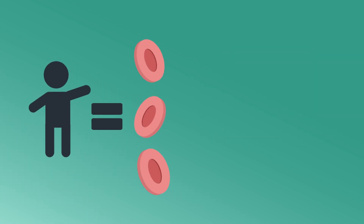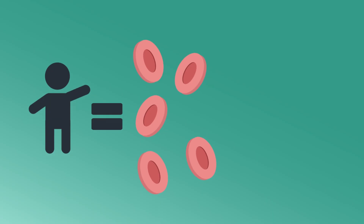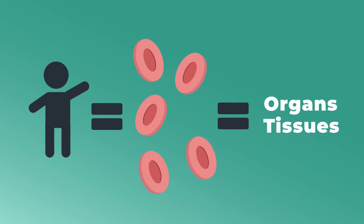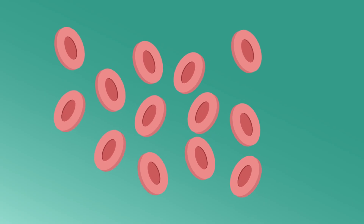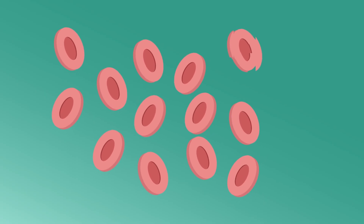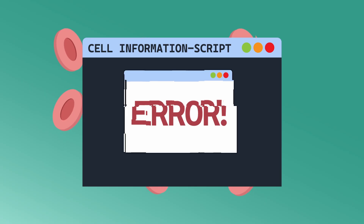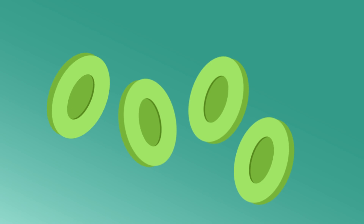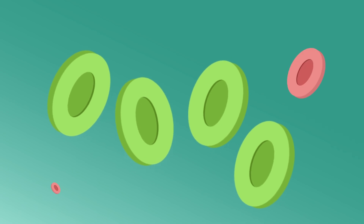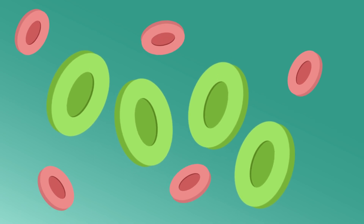Our bodies are made up of millions of cells, each with a specific job, which creates our organs and all the tissues connecting them. Unfortunately, throughout our lifetime, certain cells may suffer damage in their DNA — the script that contains all the information about our body and each specific cell. When this occurs, cancer can develop. This happens when certain cells start to grow and divide uncontrollably. These cancer cells have unique features that make them different from the remaining normal cells.